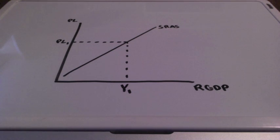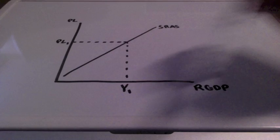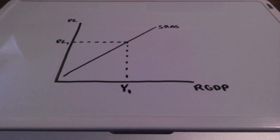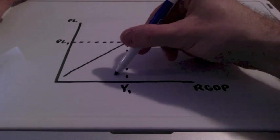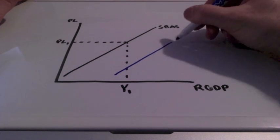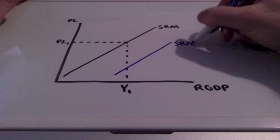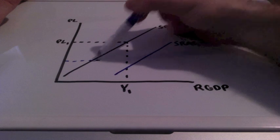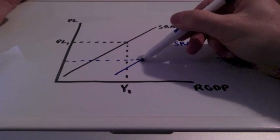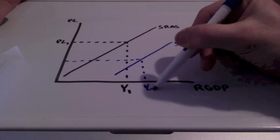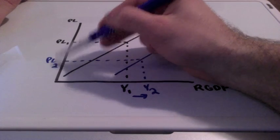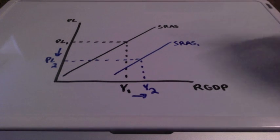There will be situations when we see an inverse relationship between price levels and real GDP when dealing with the short run aggregate supply curve. There will be situations when the supply curve shifts to the right, creating an entirely new curve labeled SRAS1. This rightward shift lowers price levels from PL1 to PL2 while increasing GDP from Y1 to Y2. This represents an increase in the short run aggregate supply curve.